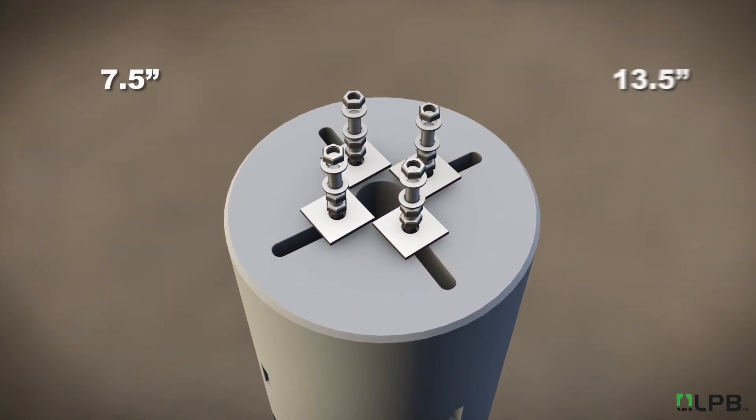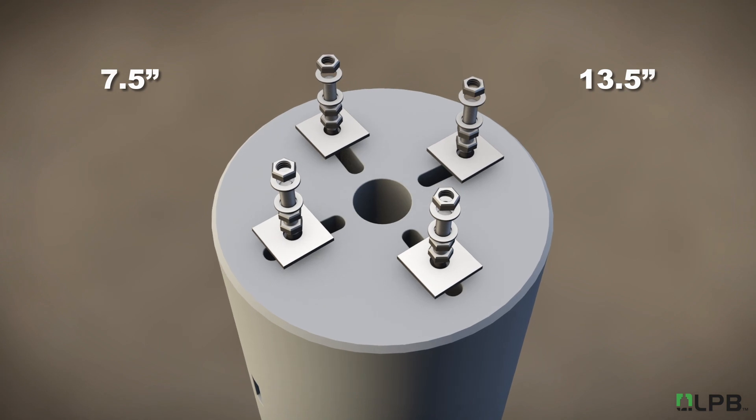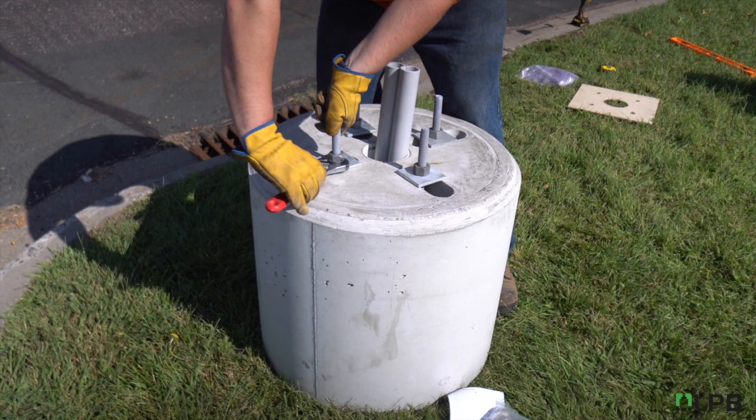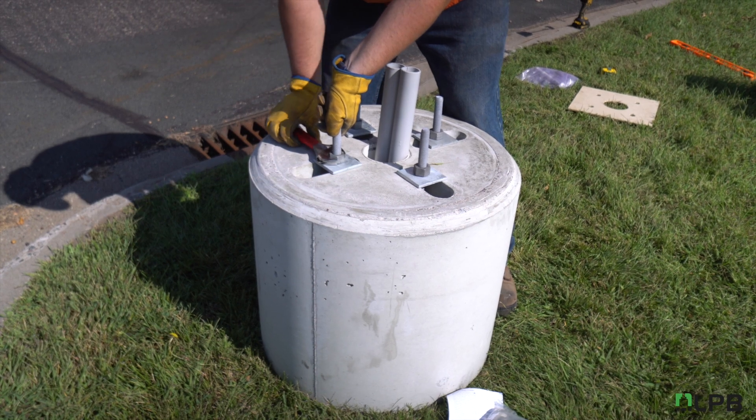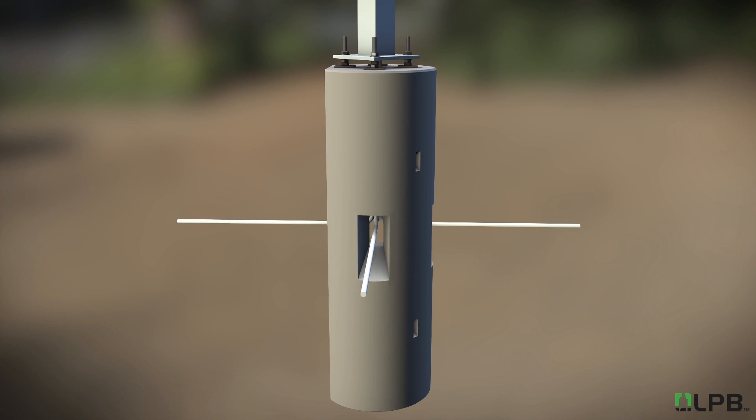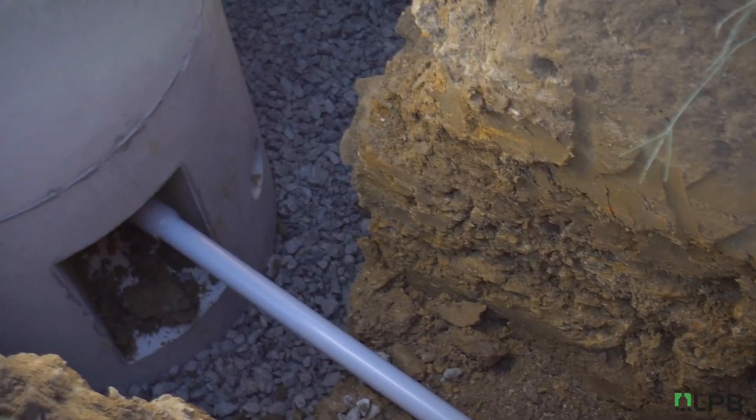First, an adjustable anchoring system with four slots in the top that allow you to thread in a rod and slide it to the desired location to match your light pole base plate. And second, four large side openings that allow for simple conduit installation from all directions.